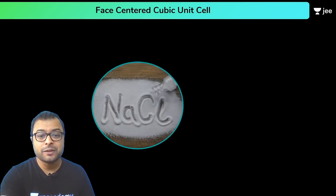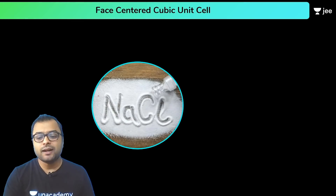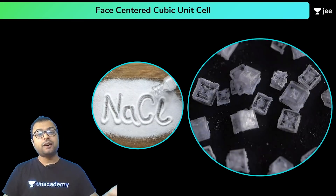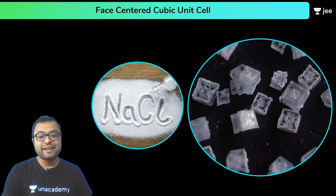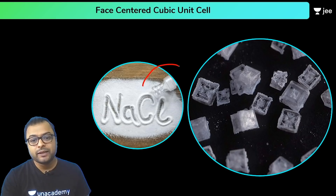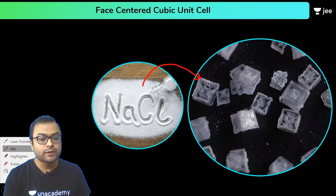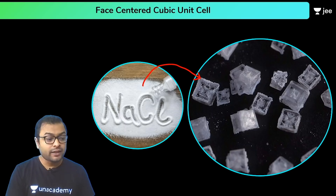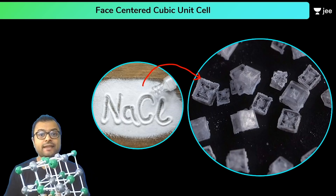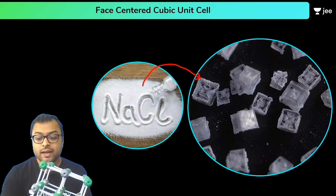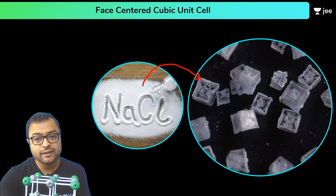NaCl is very important in our life. If you don't add NaCl in food, the taste is just not there. So if we look at NaCl at the microscopic level, it has a specific structure. And if we go further into its structure, what is present here are Na⁺ and Cl⁻ ions, which are arranged in a specific manner.